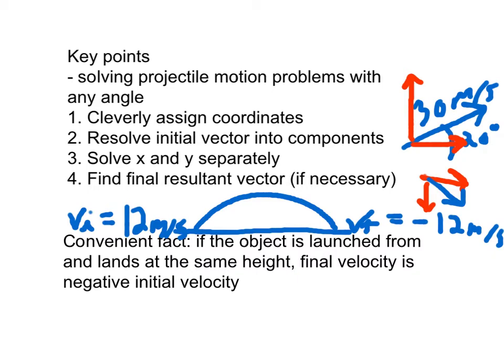its final velocity is negative 12 meters per second. So a convenient fact, if an object is launched from and lands at the same height, final velocity is negative initial velocity. Alright, moving right along.